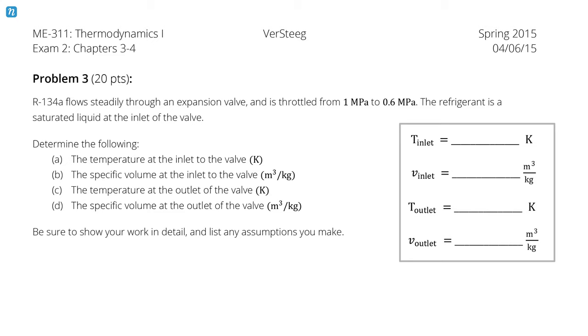Problem 3. R134A flows steadily through an expansion valve and is throttled from 1 MPa to 0.6 MPa. The refrigerant is a saturated liquid at the inlet of the valve. Determine the temperature at the inlet, the specific volume at the inlet, and the temperature and specific volume at the outlet.